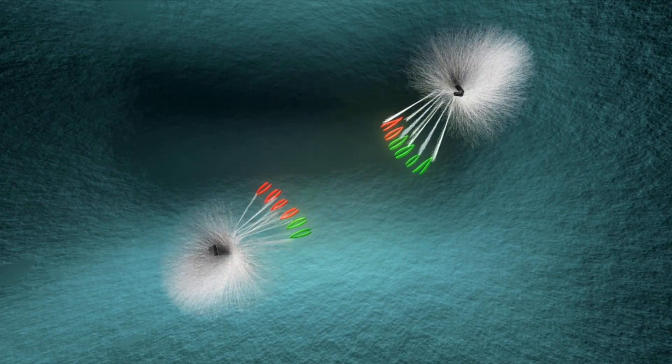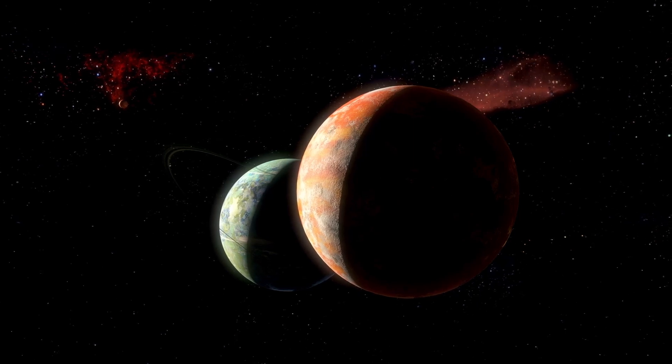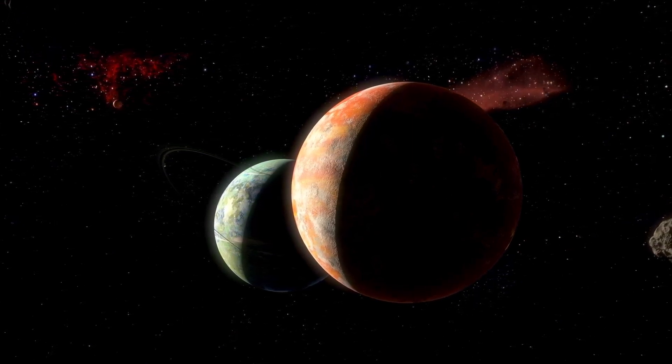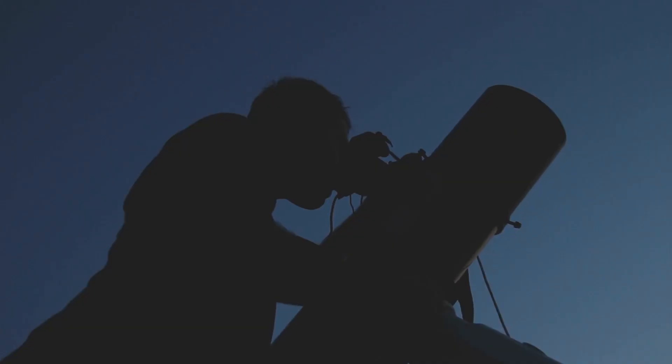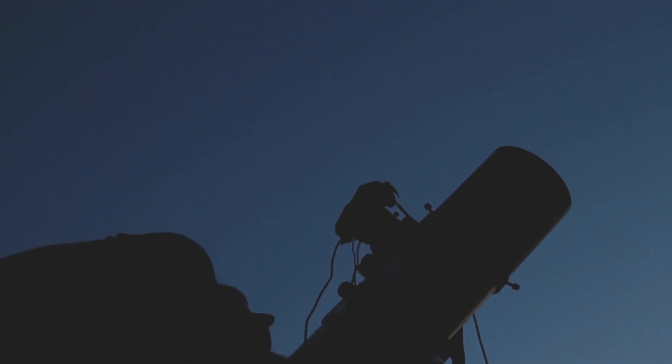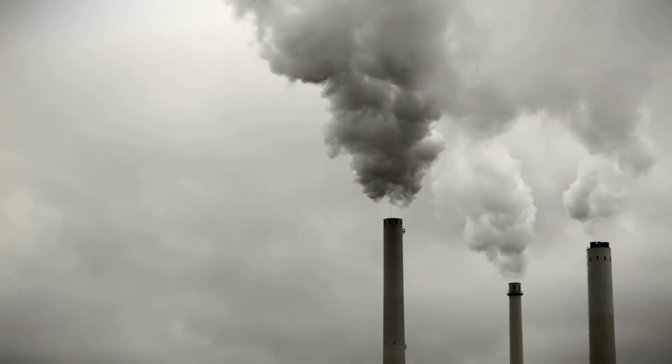This isn't a planet frozen in stasis under the harsh gaze of a red dwarf. It appears to be a living, changing environment. One of the most debated issues in exoplanetary science has been the habitability of tidally locked planets—those where one side eternally faces the star while the other remains in darkness. Could such a world support life? The new image sheds important light on this question.